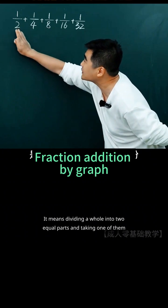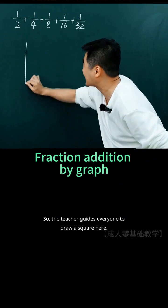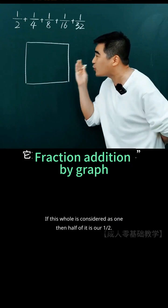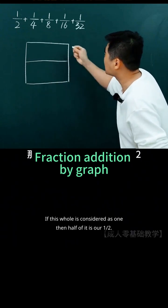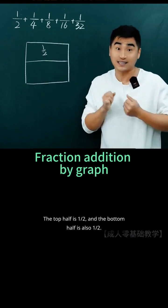It means dividing a whole into two equal parts and taking one of them. The teacher guides everyone to draw a square here. If this whole is considered as 1, then half of it is our 1/2. The top half is 1/2, and the bottom half is also 1/2.